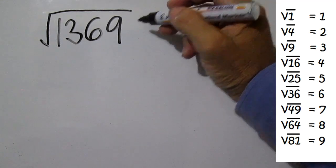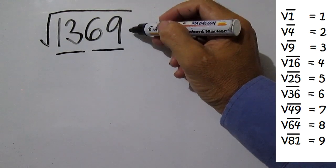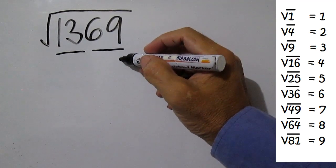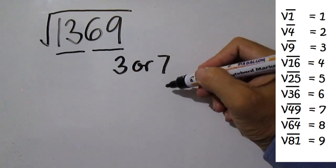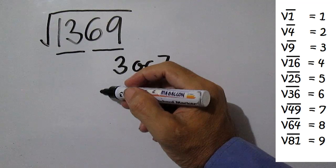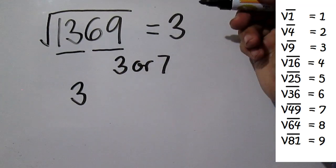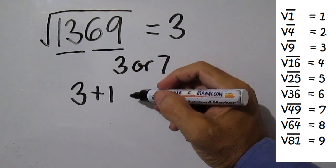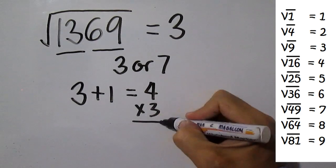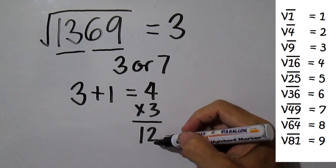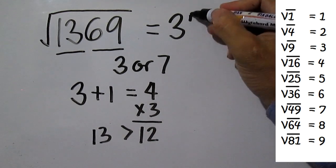Find the square root of 1369. Group the first two digits together and the next two digits together. Write the square root of the perfect square that ends with 9. The square root of 9 is 3, and the square root of 49 is 7 — so 3 or 7. Write the square root of the highest perfect square less than or equal to 13. The square root of 9 is 3. Write 3. The next number is 4. 4 times 3 is 12. Compare this to 13. 13 is greater than 12, so choose the bigger number, which is 7. The answer is 37.